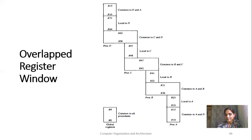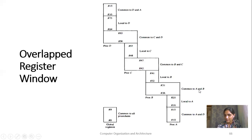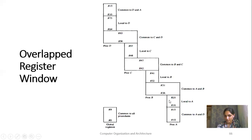So for window A, 6 registers are connected to D (common to A and D), and 6 registers are common between A and B. For each window, you will have 10 local registers and 6 plus 6, that is 12 common registers, plus the 10 global registers that are always available.